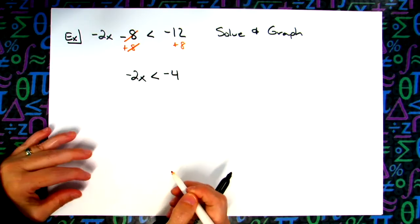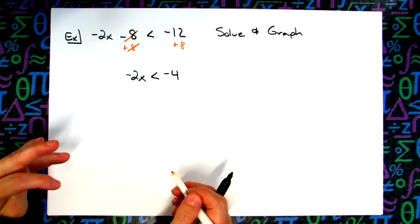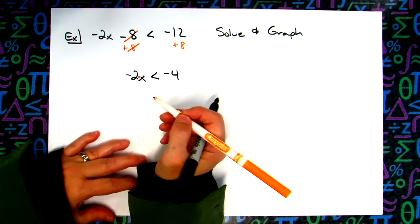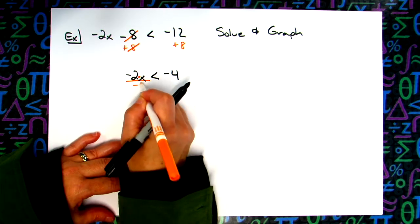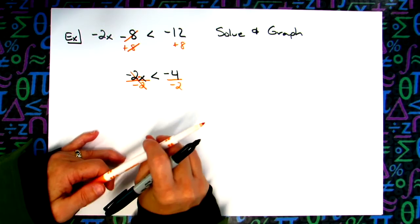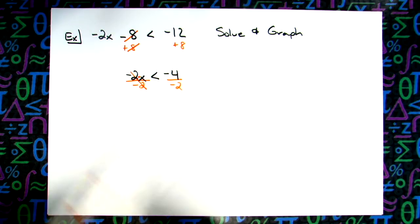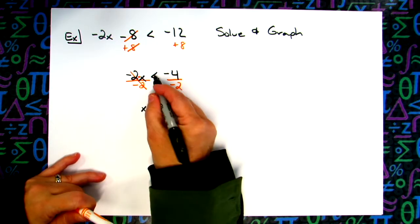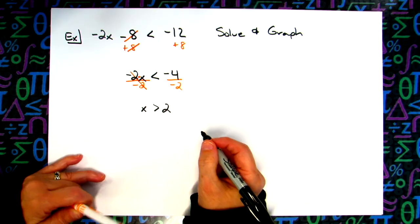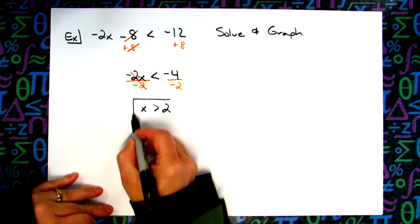I'm not going to multiply them together because this says negative 2 times x. The opposite of multiplying is division, so I'm going to divide by negative 2 on both sides. Now I need to flip the inequality. So I write x, flip the sign, and dividing like signs gives a positive 2.